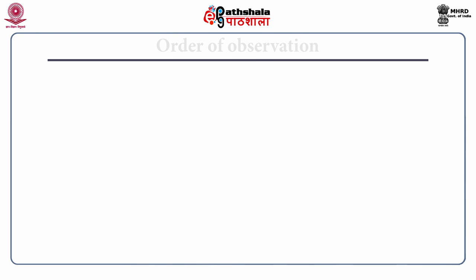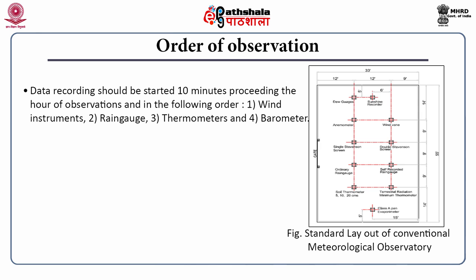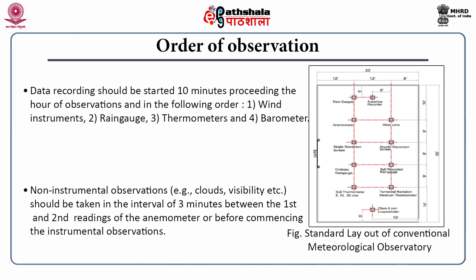In which order should the observations be taken? Data recording should be started 10 minutes preceding the hour of observation and in the following order: first comes wind instruments, then rain gauge, then thermometers, and then barometers. Non-instrumental observations like clouds and visibility should be taken in the interval of three minutes between the first and second reading of the anemometer, or else taken before commencing the instrumental observations.